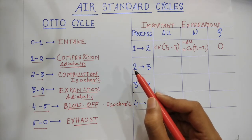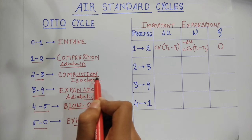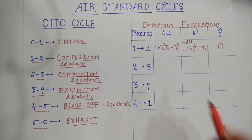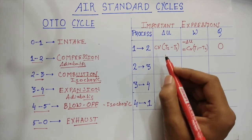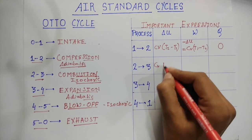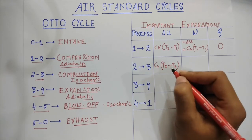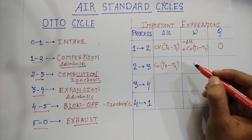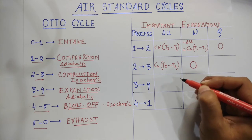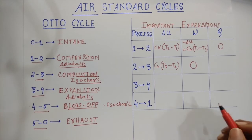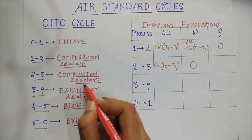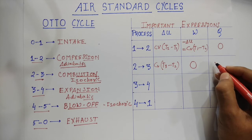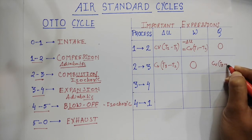For process 2 to 3, the combustion process — it is an isochoric process, so ΔU = cv(T3 - T2). Since it is isochoric, the work done calculated from the graph will be 0, as the volume doesn't change. The value of q will be cv(T3 - T2).